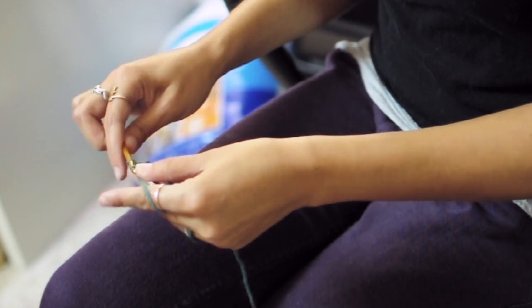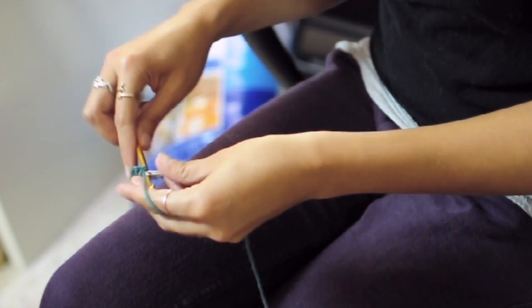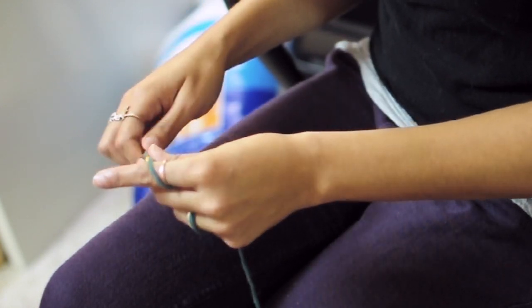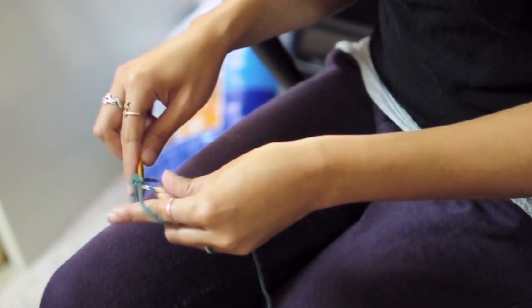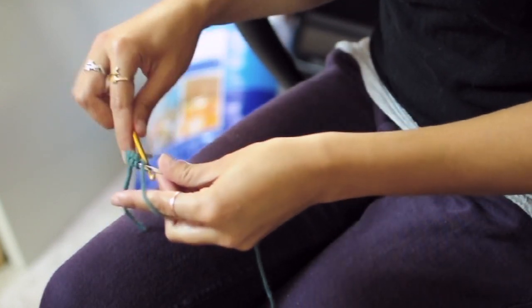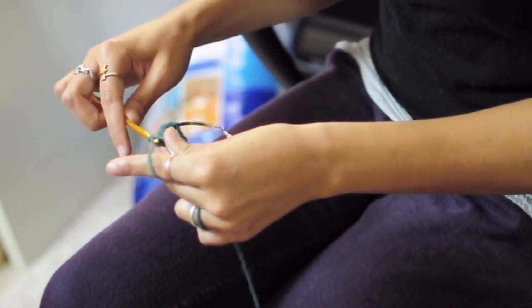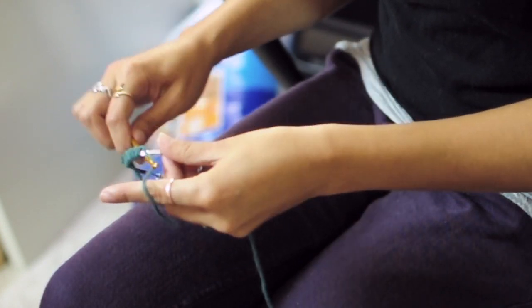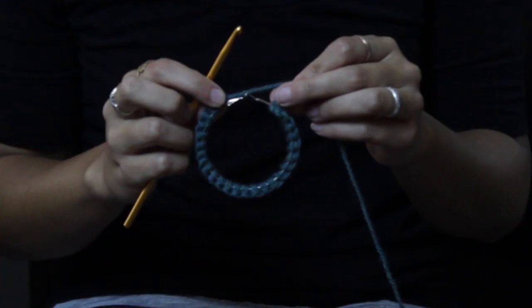So you just keep doing that all the way around. It's just like a fancy chain. And that is how to crochet around a metal loop.